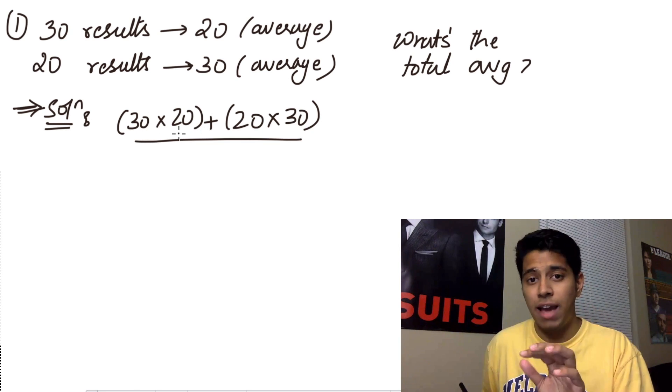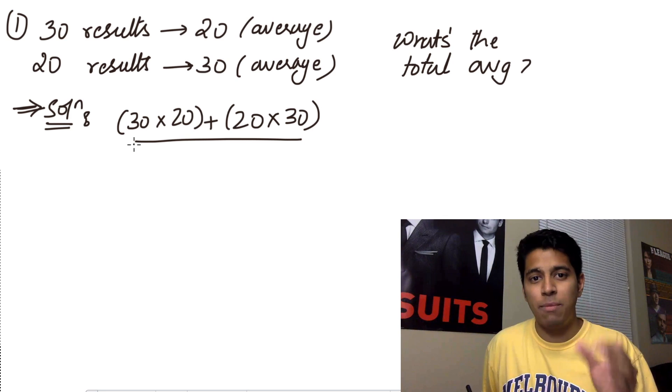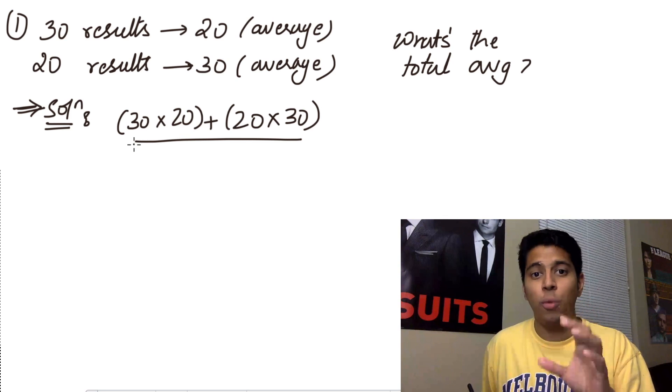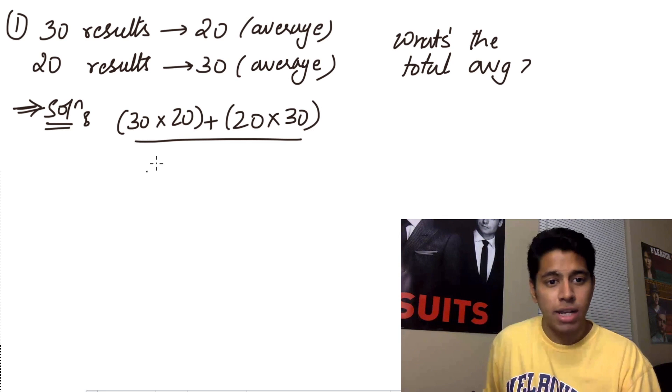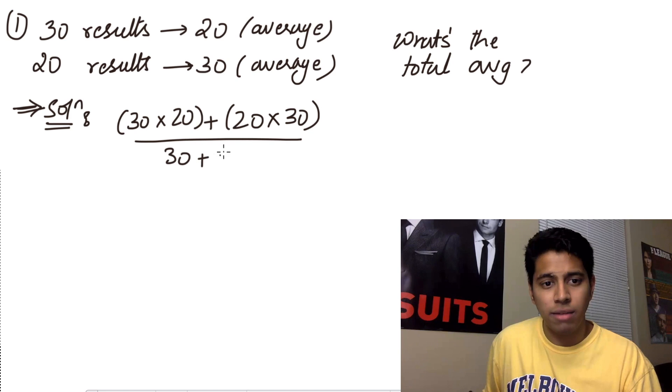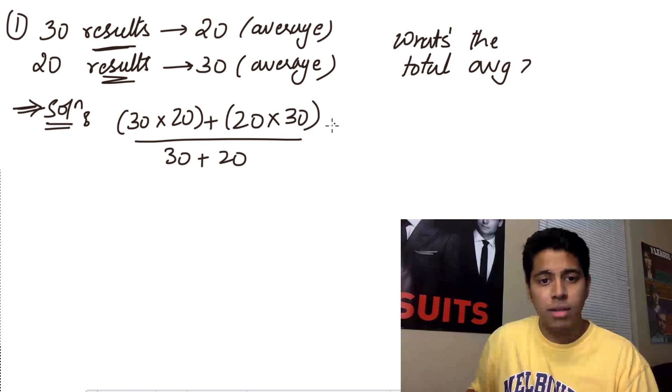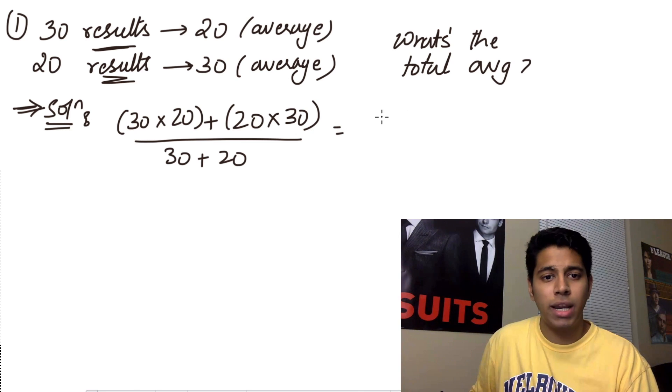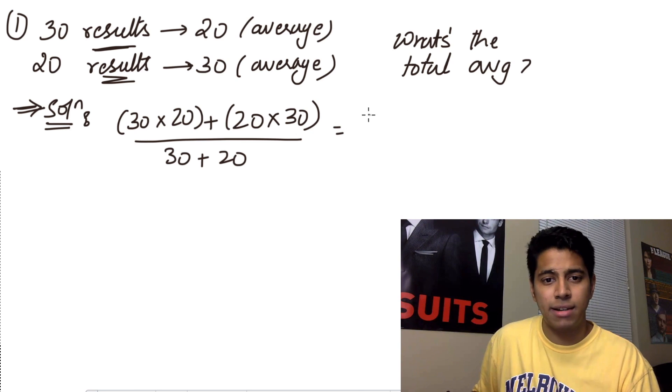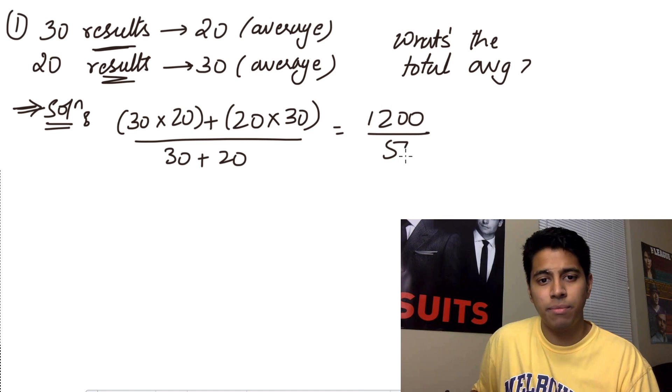Now the number here are the results not the averages. Even though the numbers are the same when you add them up, make sure you know what you're adding and where you're putting what. So you've got 30 plus 20 here. That comes from the results because they are the number of items. Now 30 into 20 plus 20 into 30 is going to be 600 plus 600. That's 1200 divided by 30 plus 20 is 50. 1200 by 50 is 24.